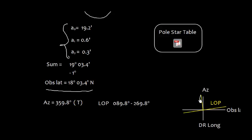Well, LOP is 90° to that, so this is 359.8°. This is the direction of sun or the Polaris. So 90° to that, which is 89.8°, and then 180° to that, which is 269.8°. So this was the observed altitude. DR latitude was different, and this was the DR longitude, while this is the line of position.